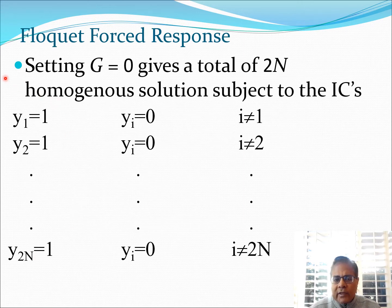How do we get these homogeneous solutions? We essentially set g equals 0 whenever we are trying to go for a homogeneous solution. Recall from previous study of differential equations of a spring mass damper type of system, you will get a total of 2n homogeneous solutions subject to these initial conditions. For example, the first initial condition would be y_1 equals 1 and all the rest y's are 0. The next case is y_2 equals 1 and all the rest of the y's are 0, all the way to the last case where y_2n equals 1 and all the rest of the y's are 0.